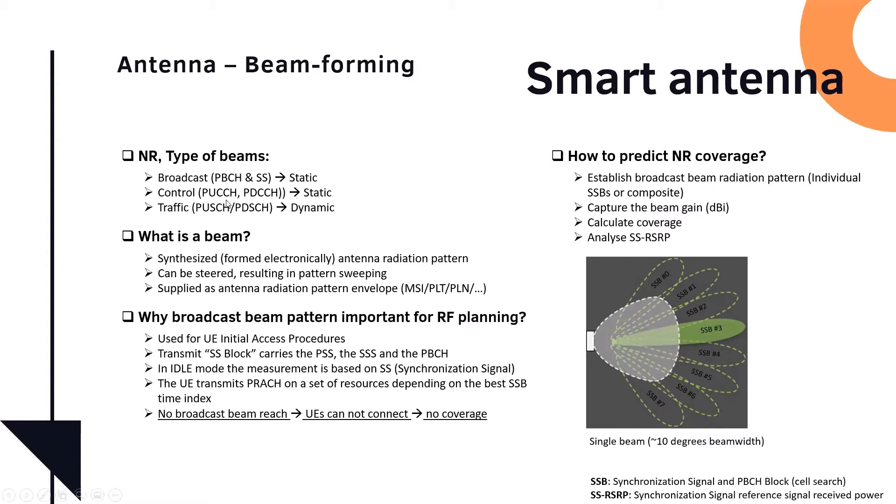So in the next radio, there are three types of beams basically. We've got the broadcast beam, control beam, and traffic beam. So the broadcast is used for the PBCH, the physical broadcast channel and the secondary synchronization. And this is a static type of beam.